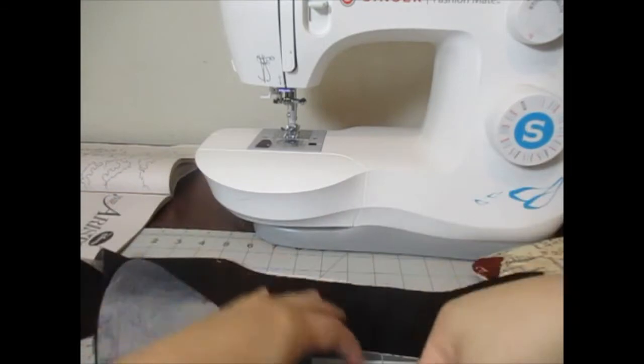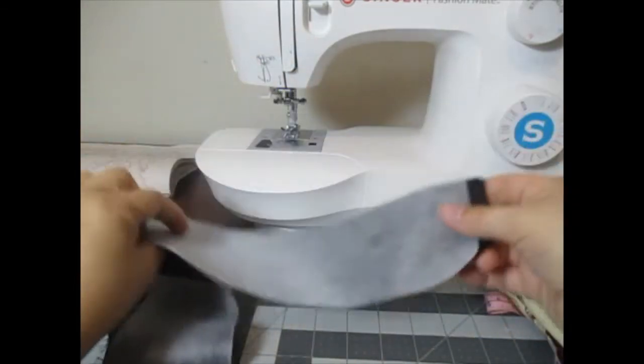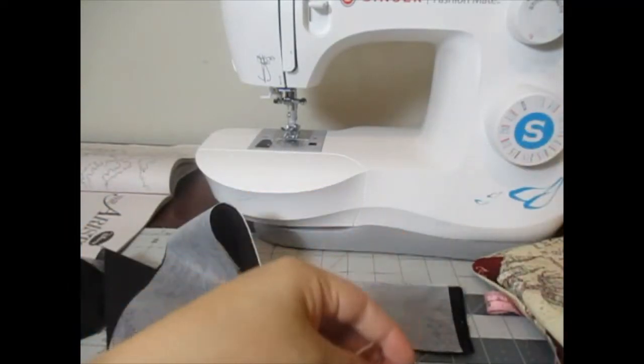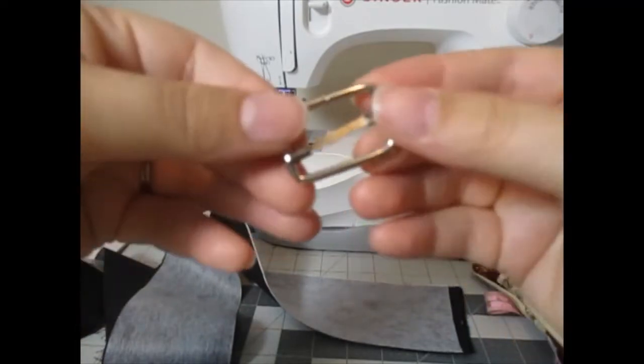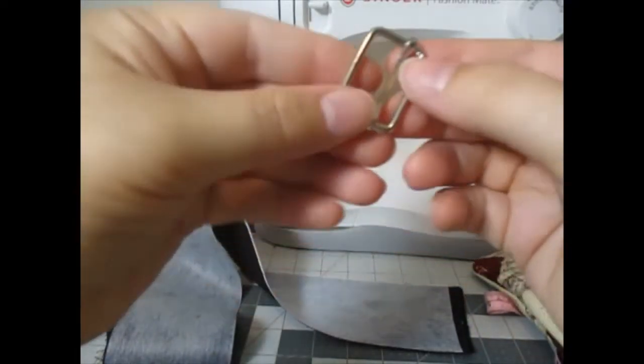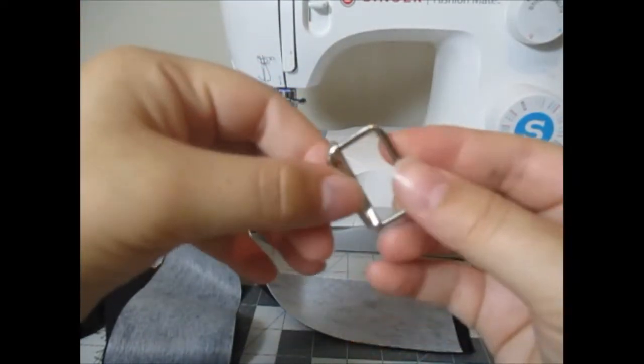You're also going to need fusible interfacing, which I have already applied to my fabric. And you're also going to need an adjustable buckle, a little buckle. This one is one inch, just one inch long.